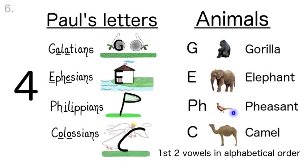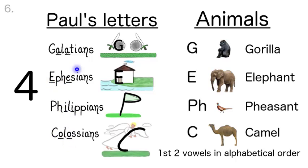Let's say these animals three times to get their beginning letters and pictures in our minds: Gorilla, Elephant, Pheasant, Camel. Gorilla, Elephant, Pheasant, Camel. Gorilla, Elephant, Pheasant, Camel. Also, the first two vowels of each book name are in alphabetical order: A-A, E-E, I-I, and O-O.